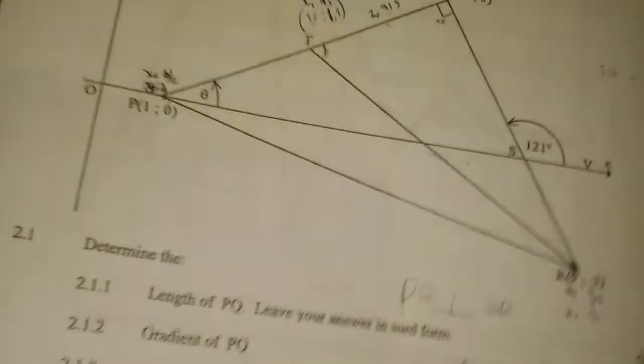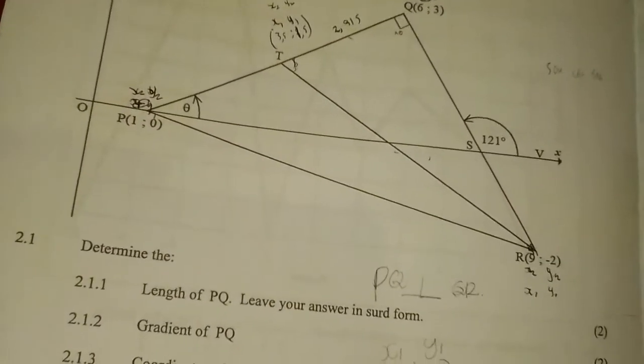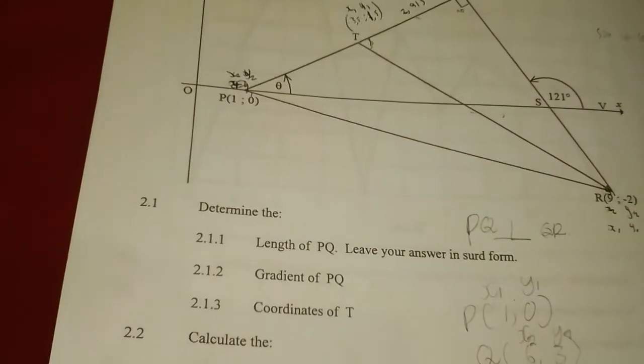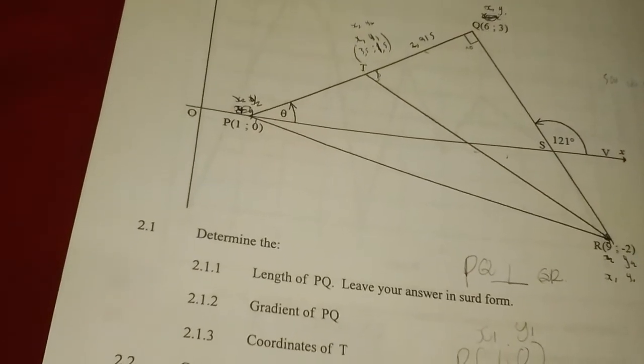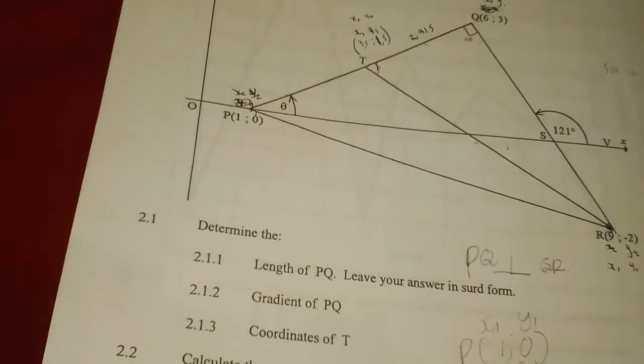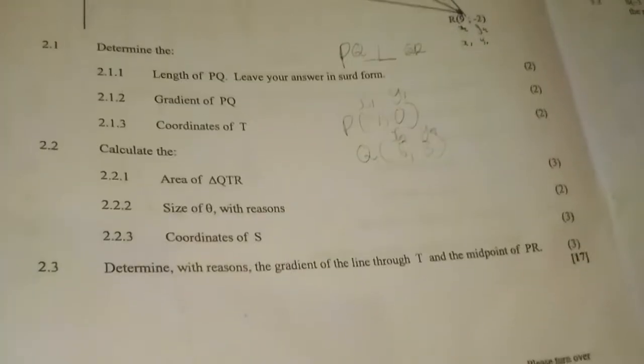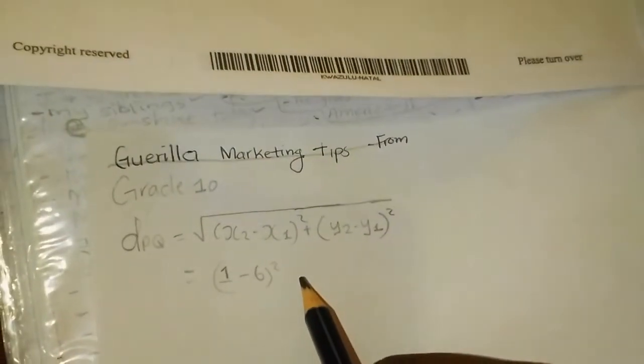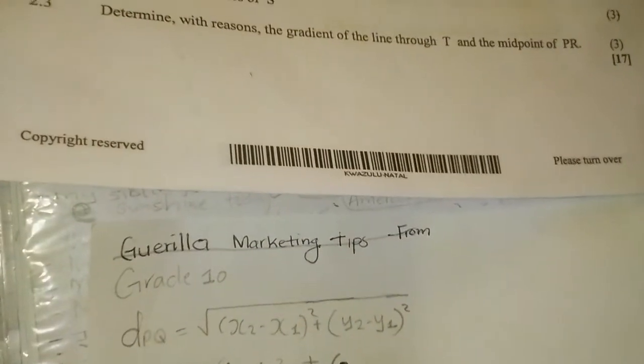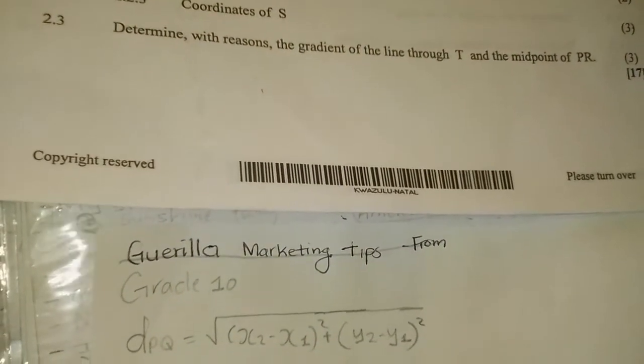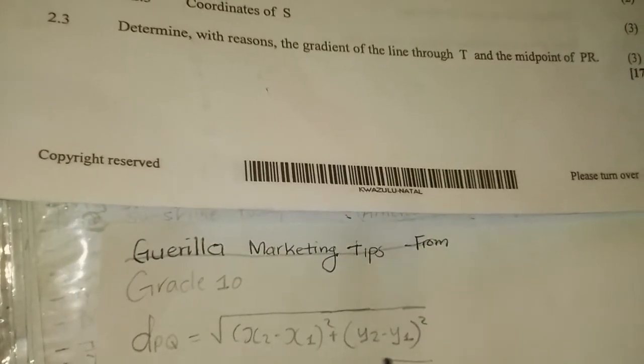And then we substitute our values. That's 1 minus 6 squared. Sorry, don't forget to put the square there. And then plus 0 minus 3 squared as well.